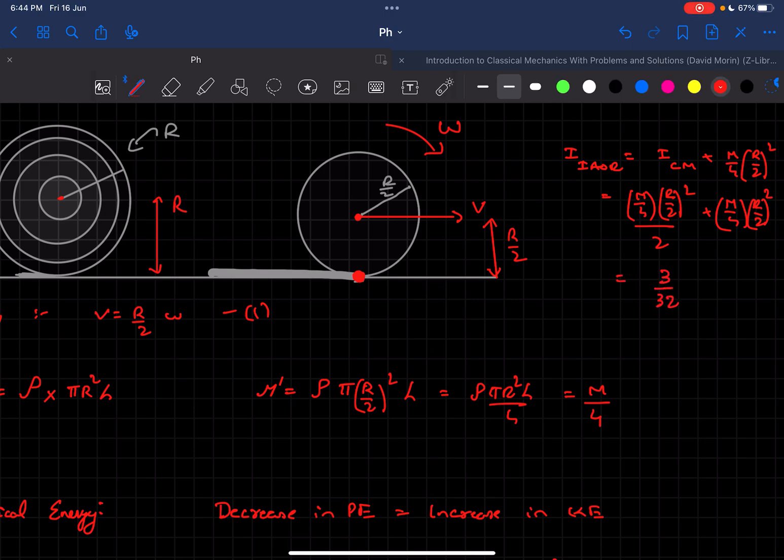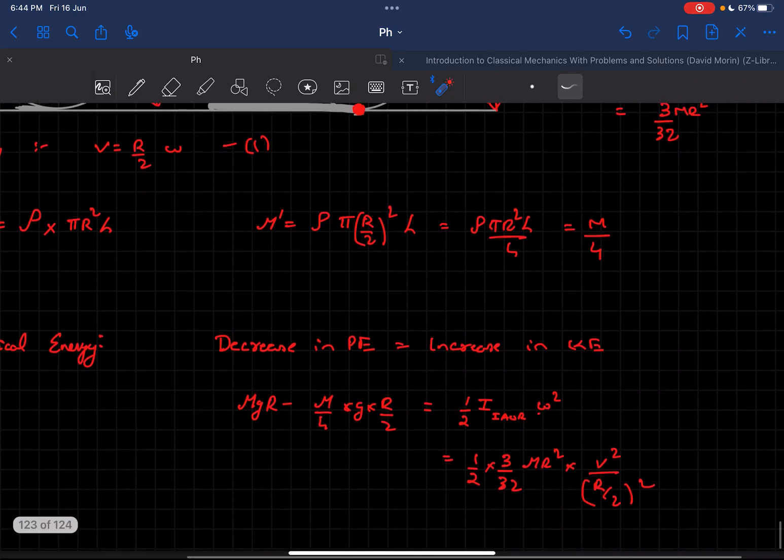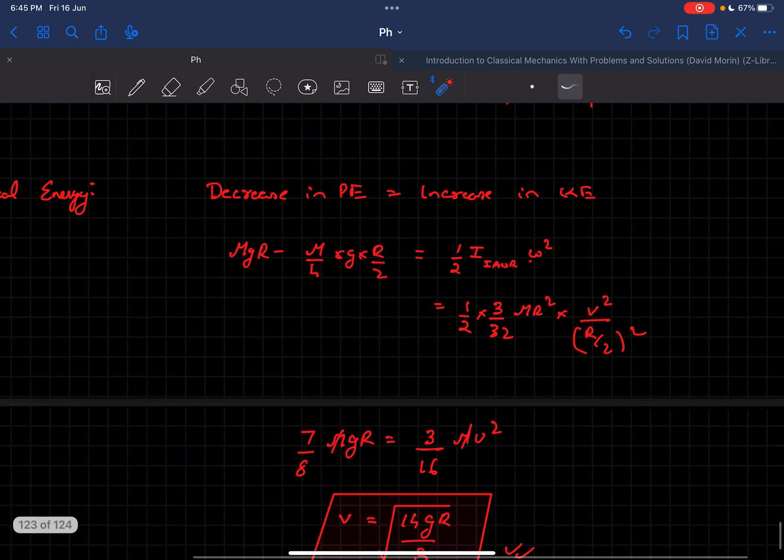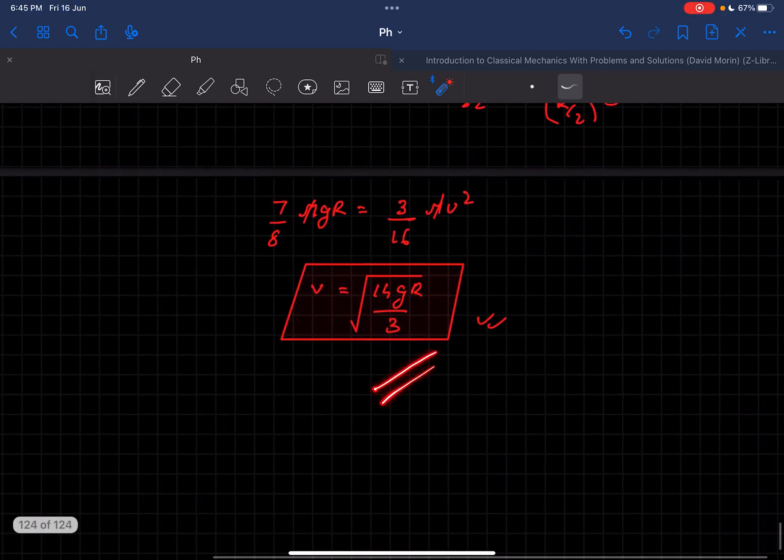I just substituted it all directly and write the value of omega as v divided by r/2. After solving, you'll get the value of the velocity of the center.